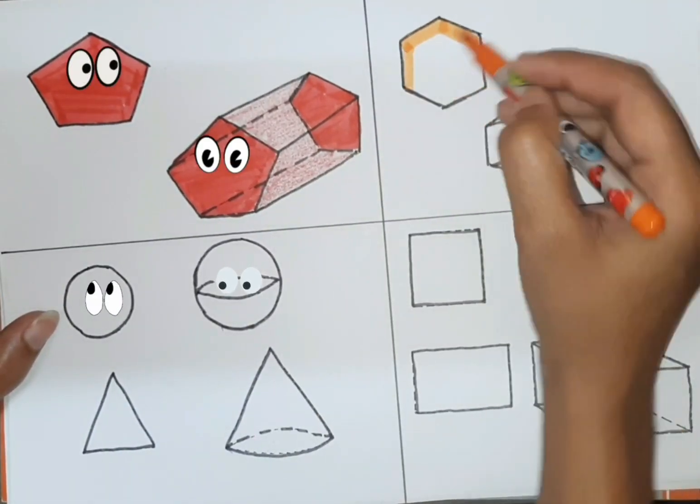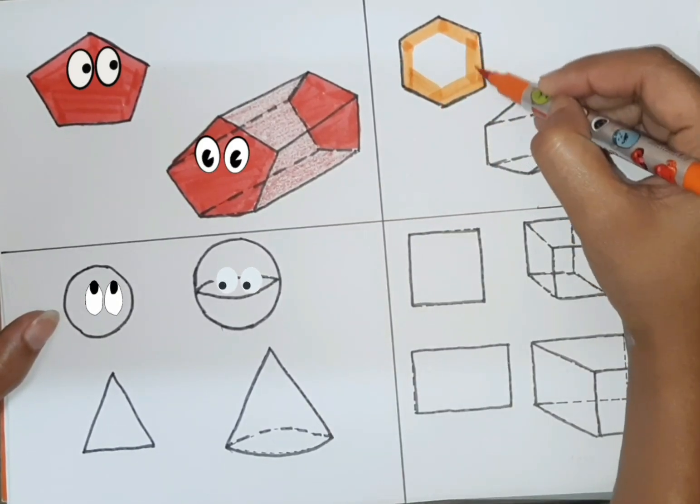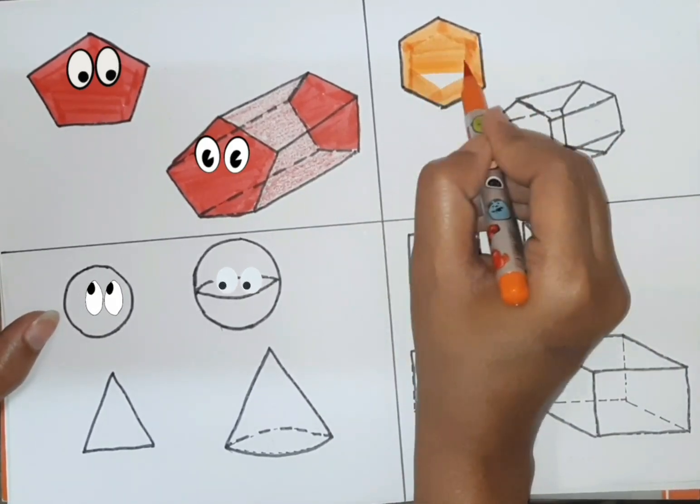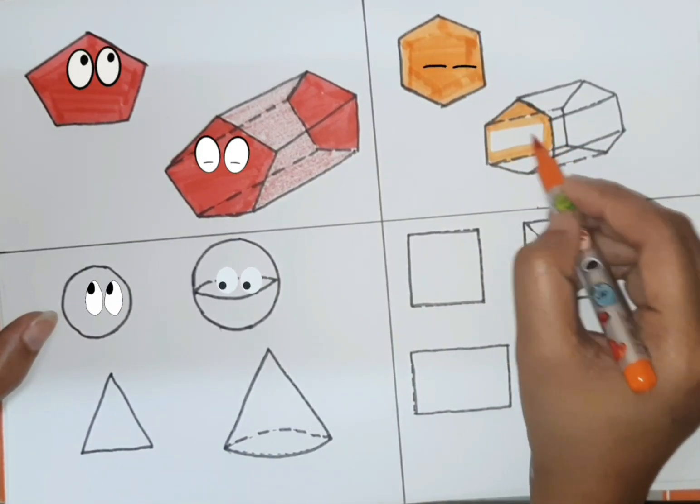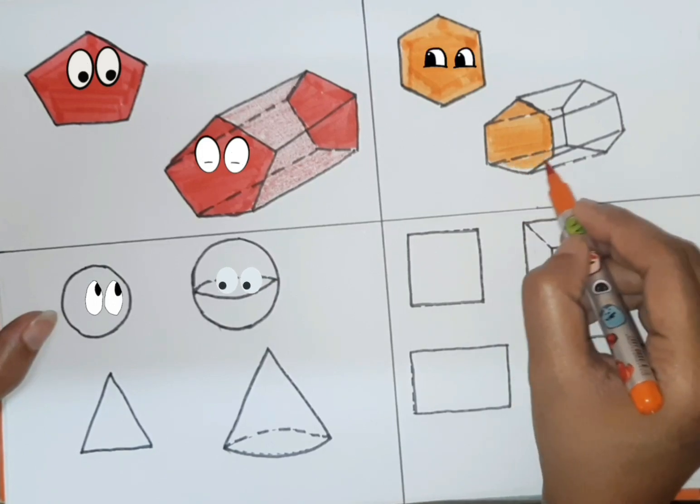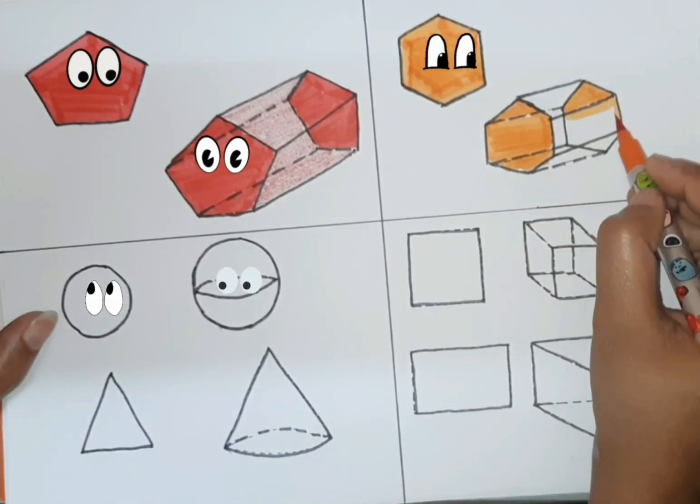Now second color of rainbow, and coloring hexagon. Hexagon of 3D shape. Orange color, second color of rainbow.